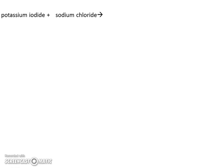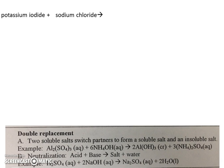Let's predict the products for this double replacement reaction. Remember, it's going to be one of these two templates. Potassium iodide and sodium chloride are both salts, so we're dealing with example A here.